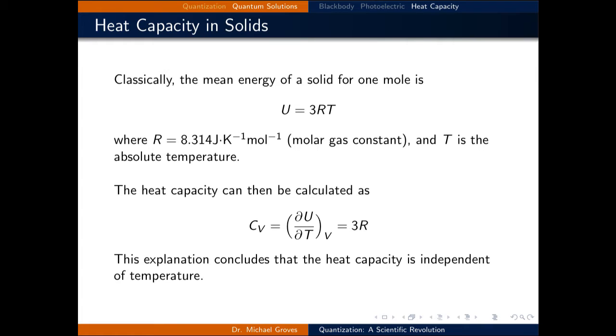Now, the heat capacity at constant volume can be calculated as the derivative of the internal energy with respect to temperature, keeping the volume constant. In this case, we get Cv = 3R. This explanation concludes that the heat capacity is independent of temperature, since it does not vary with temperature.